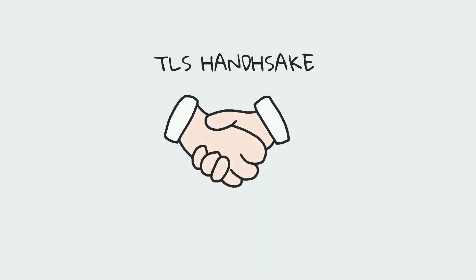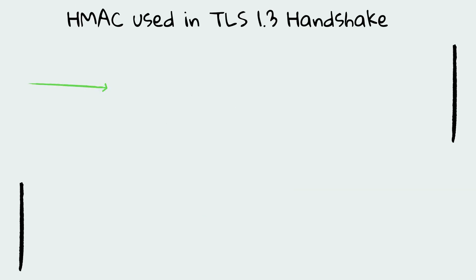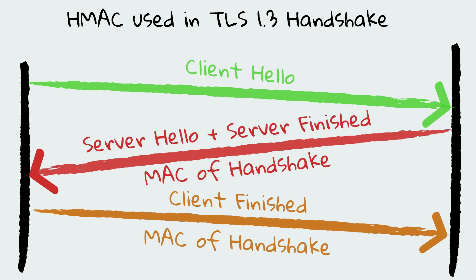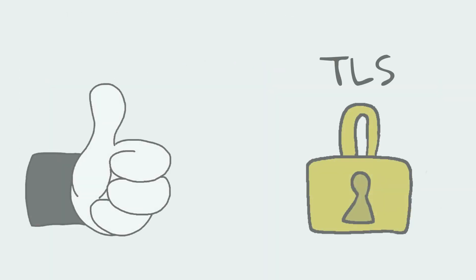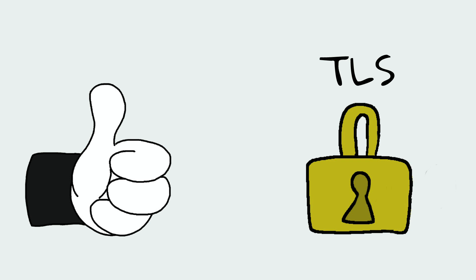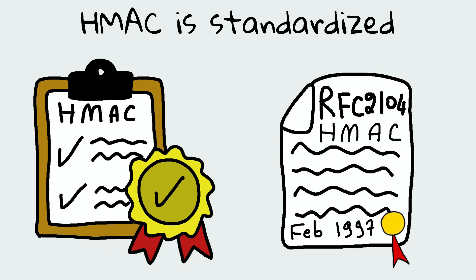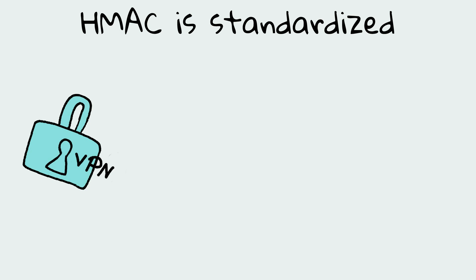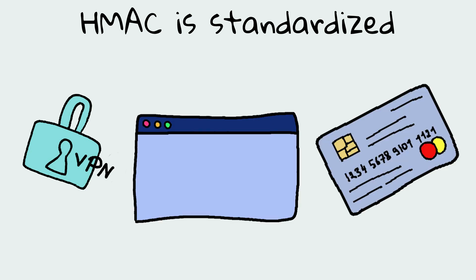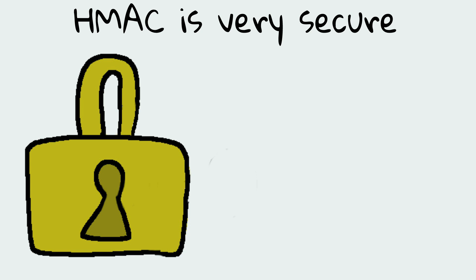HMAC is used in the TLS handshake, particularly in the finished messages, where a MAC of the entire handshake up to that point is sent. HMAC is suitable for TLS for its many advantages. First, HMAC is flexible and can work with a variety of hash functions such as SHA-256 or SHA-3. HMAC is also widely recognized and standardized, with its own RFC published in February 1997, making it easier to implement in different environments. It can also be used in VPNs, web application APIs, and payment systems. HMAC is considered very secure against common hash function vulnerabilities, due to the additional complexity introduced by the secret key.